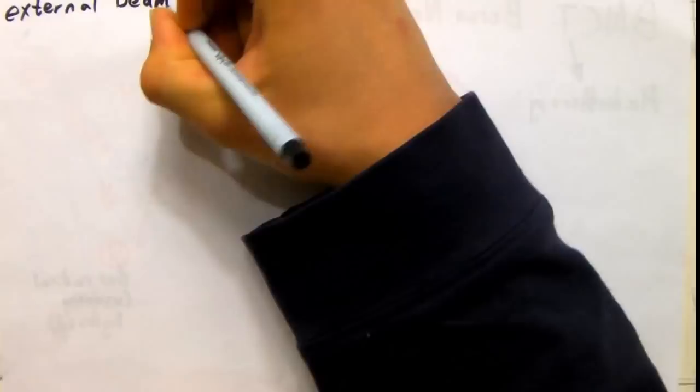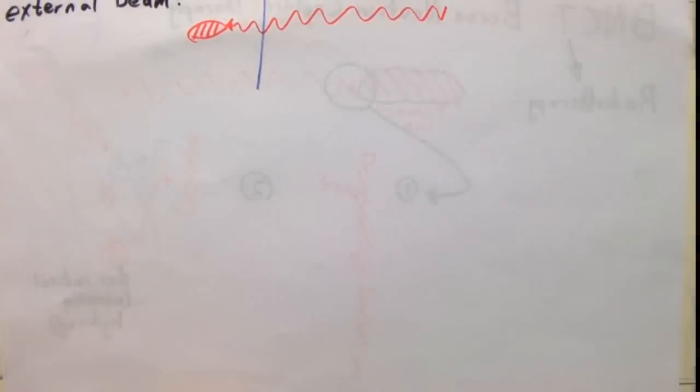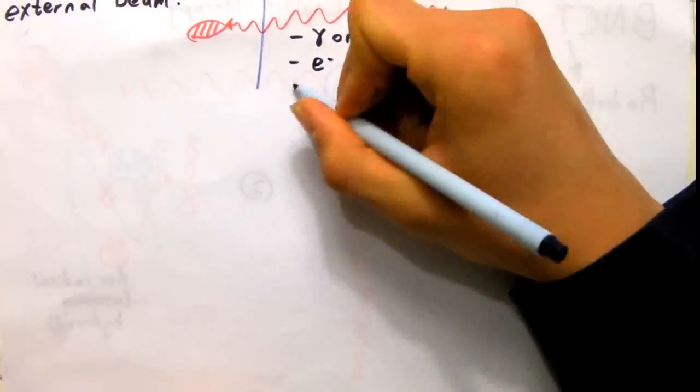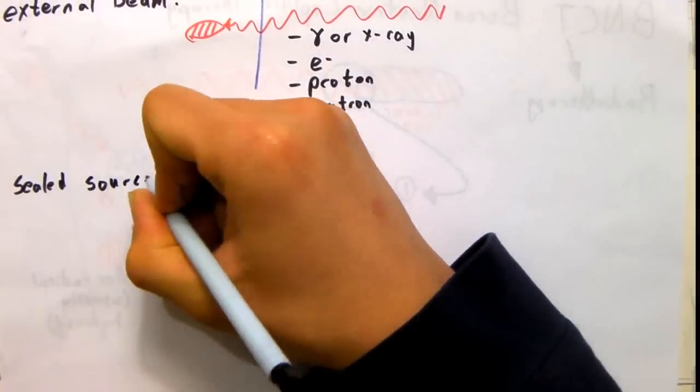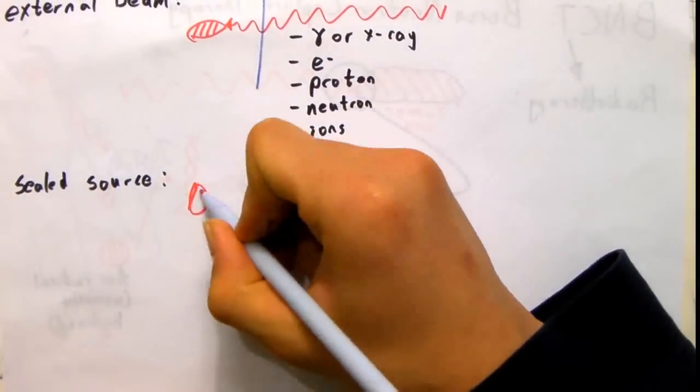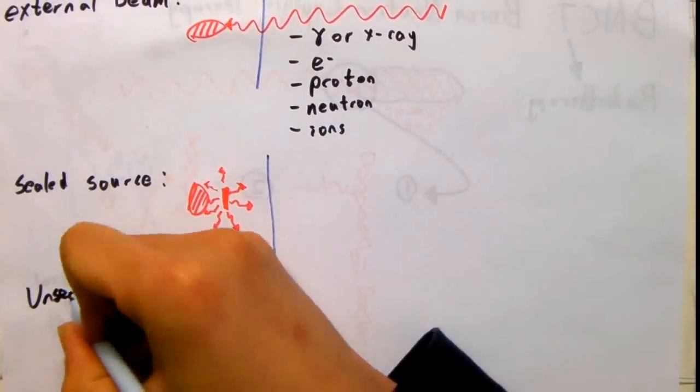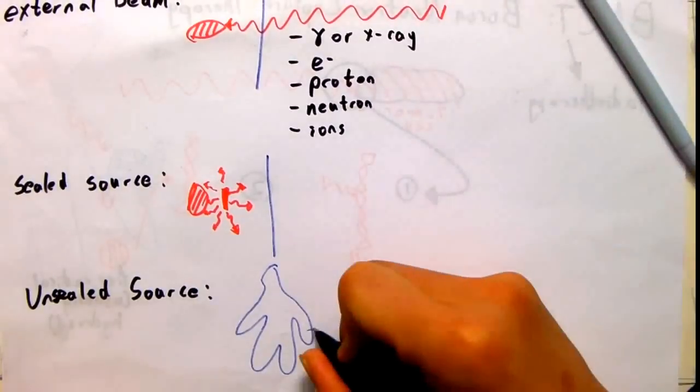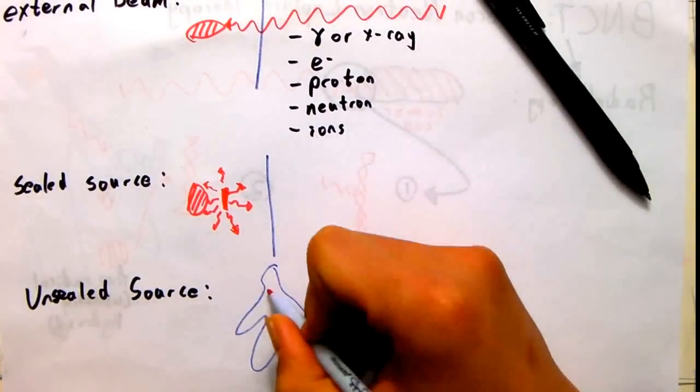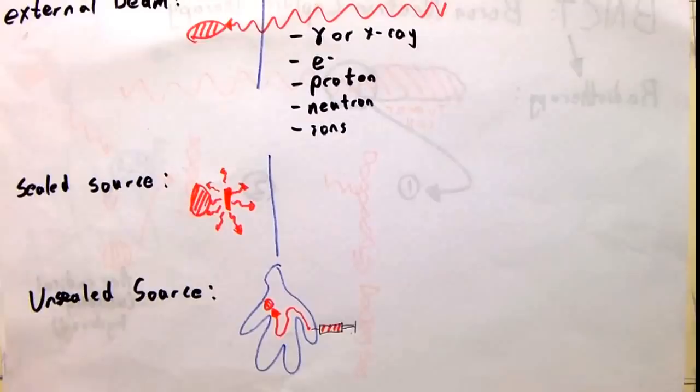There are three main types of radiotherapy. External beam radiotherapy uses a beam of radiation such as high energy x-rays, gamma rays, electron beams or proton beams and focuses it directly at the tumour. Sealed source radiotherapy involves placing a radioactive source directly into the body in or next to the tumour through surgery. And finally there is unsealed source radiotherapy which involves injecting or ingesting a soluble radioactive substance designed to concentrate in tumours.